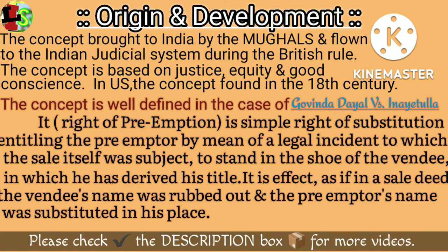Let us now understand this explanation in the form of an illustration. Say a property owned by Mr. A is adjoining to the property of Mr. B, and Mr. B wants to sell his property and sold it to Mr. C. Here, A has the preemption right, so B should have first offered it to Mr. A, and if rejected, then he could have sold the property to Mr. C.